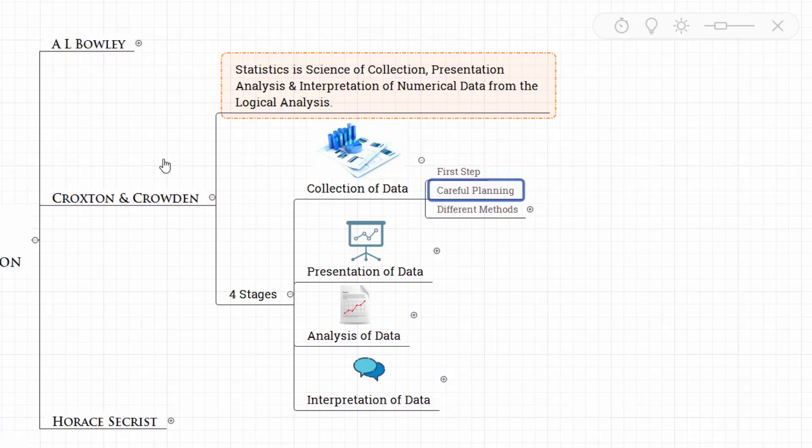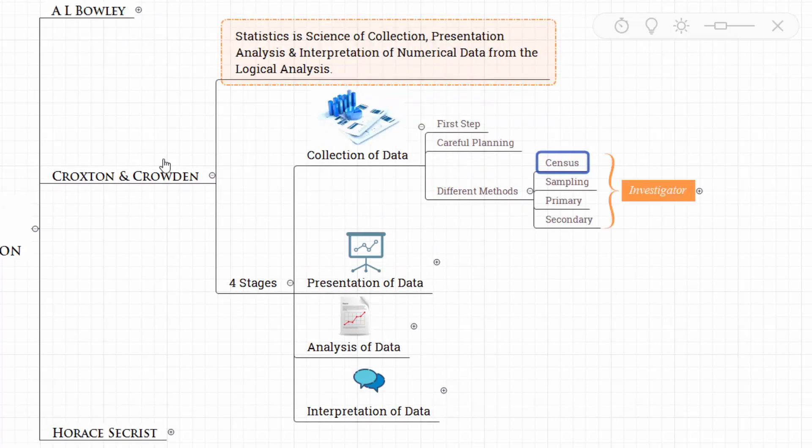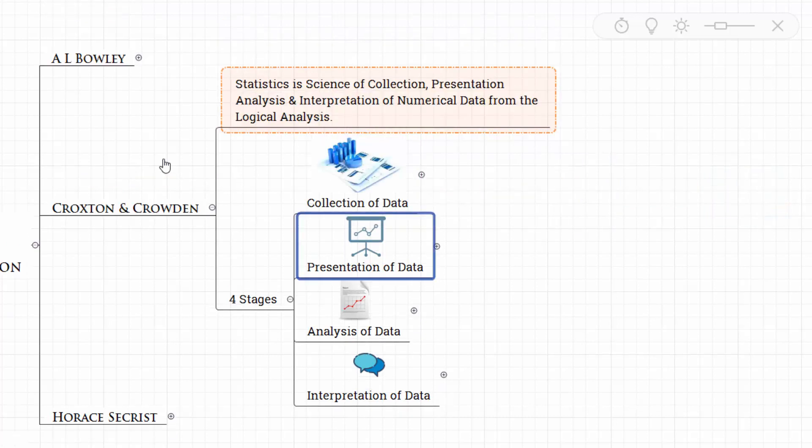There are different methods available for collecting data through census, sampling, primary, secondary. The investigator should choose the right method depending upon the circumstances. So that's about collection of data. Then comes presentation of data.